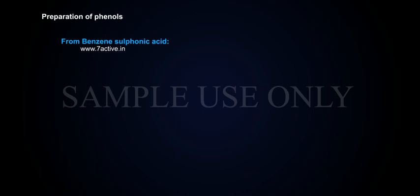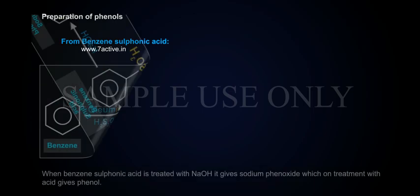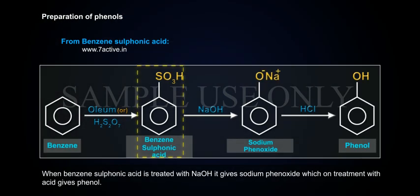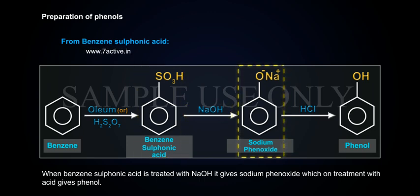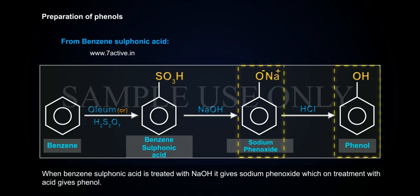From benzene sulfonic acid: When benzene sulfonic acid is treated with NaOH, it gives sodium phenoxide, which on treatment with acid gives phenol.